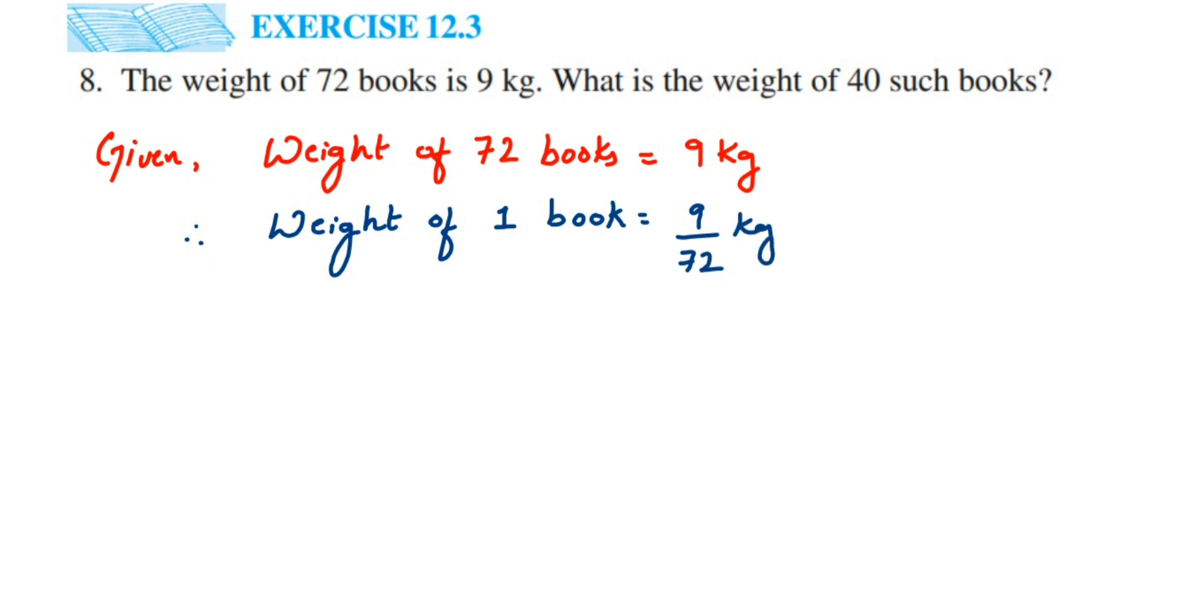Now we'll divide this, we can divide this in 9 table, 9 ones are 9 and 9 eights are 72. So we got 1 by 8, so 1 by 8 kg. So 1 book weight is 1 by 8 kg.